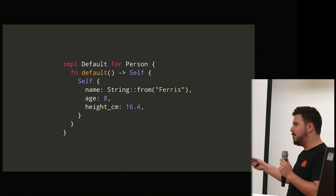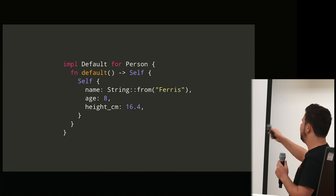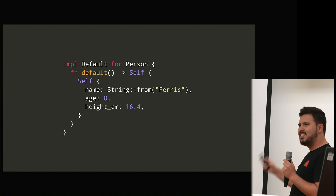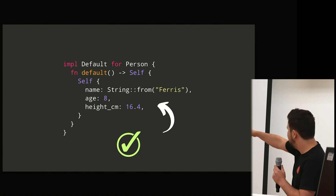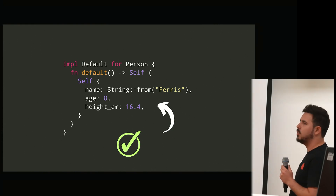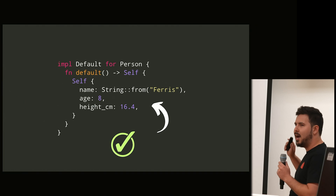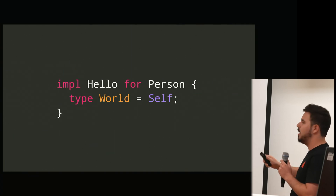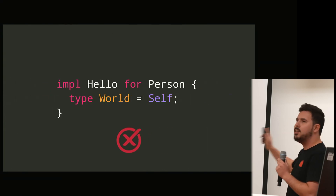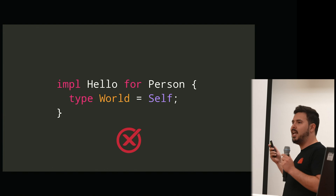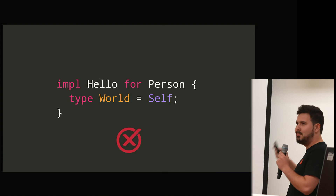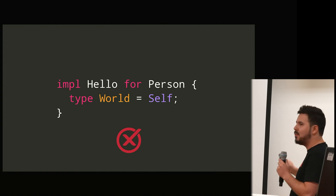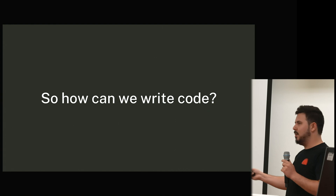Final question — the toughest one. Impl default for person, default produces this. Are there any lines of code in this? I would say yes — there it is right there. It's constructing self with these different things; that's actual code. Last example: impl hello for person, type world is self. Is there any code there? I'm gonna say no. There's no actual behavior, nothing that actually executes at runtime. It's just implementing a trait that declares some sort of associated type. So in theory, we now understand what a line of code is — so how can we write code without a single line of code?